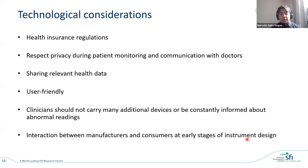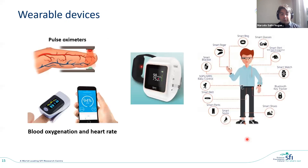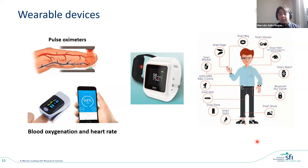Some current technologies already meet these considerations. For wearable devices, monitoring blood oxygenation and heart rate with pulse oximeters is already available in smartwatches. This is a very successful technology that can be implemented with all those considerations in mind. Wearable devices could be used not only in watches but also integrated into shoes, glasses, and almost anywhere on the body that you can wear them.